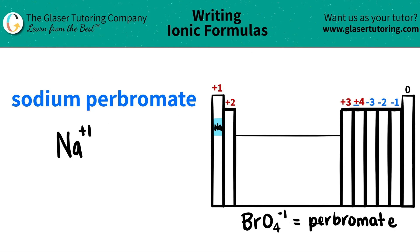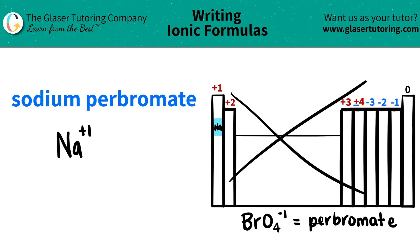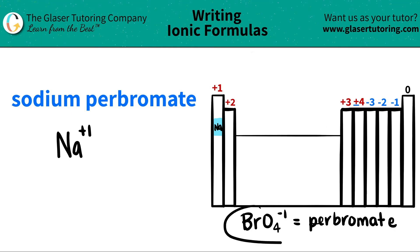Now I come over to perbromate. I see that it's an ATE ending. All ATE endings are always polyatomic ions, which means that they're not going to be found on the periodic table. Polyatomics have to be memorized. In this case, perbromate — just memorize it, use flashcards, do whatever you got to do. Perbromate is BrO₄⁻¹.